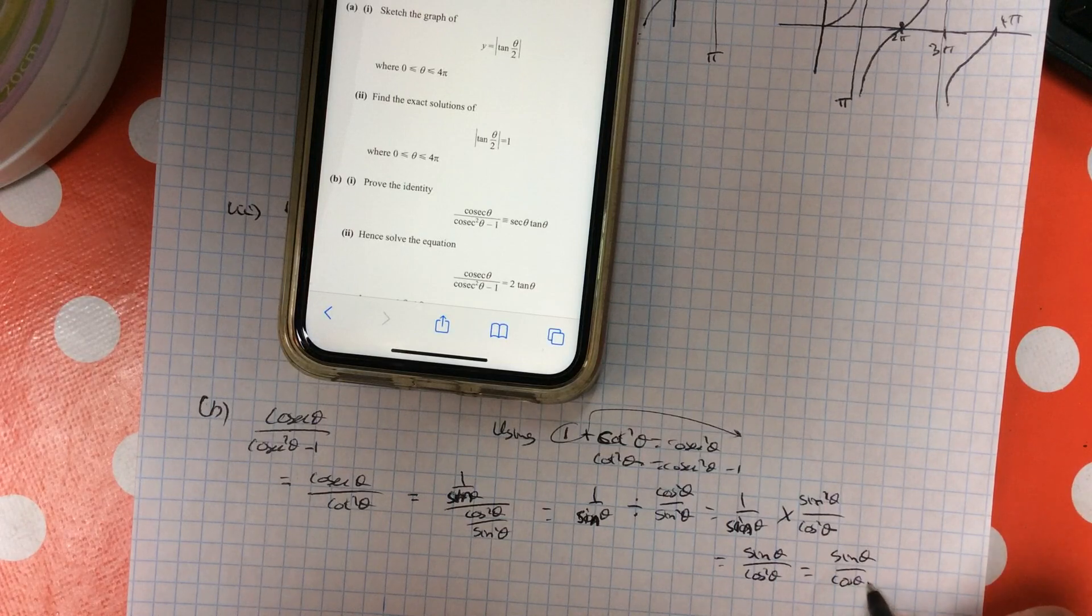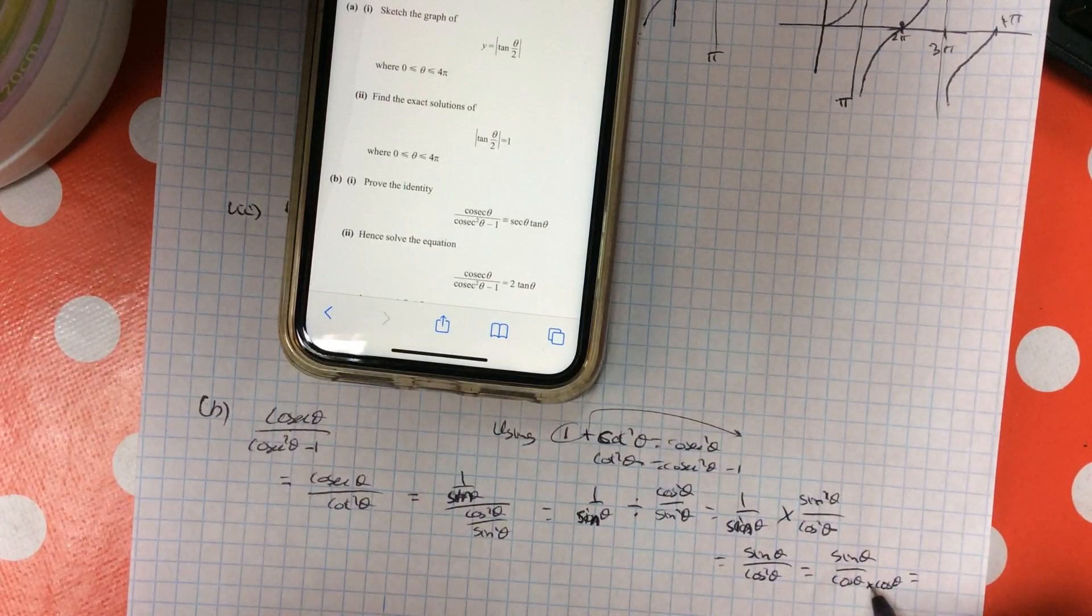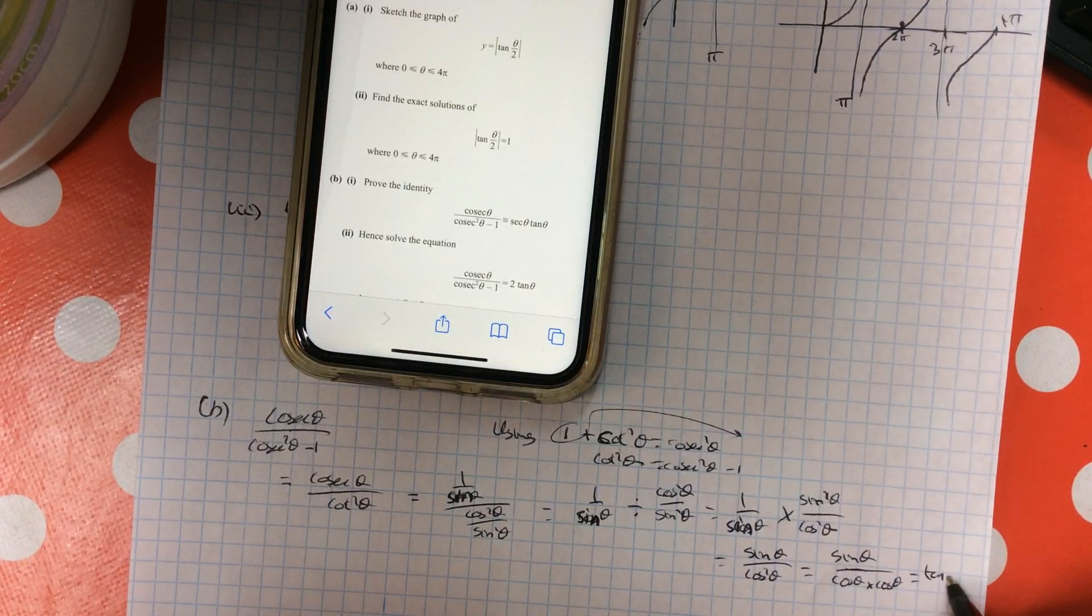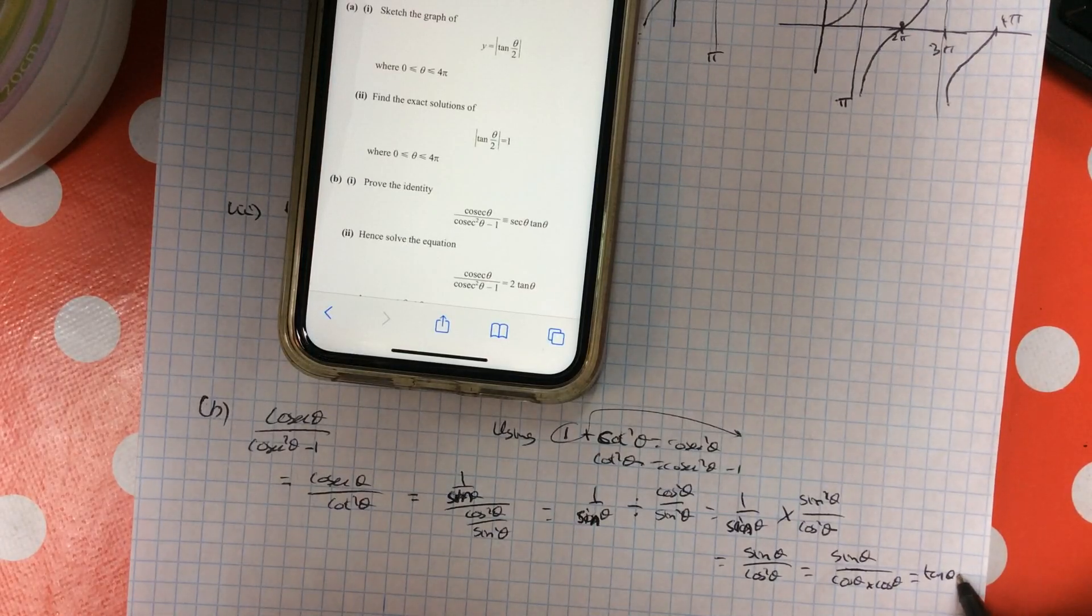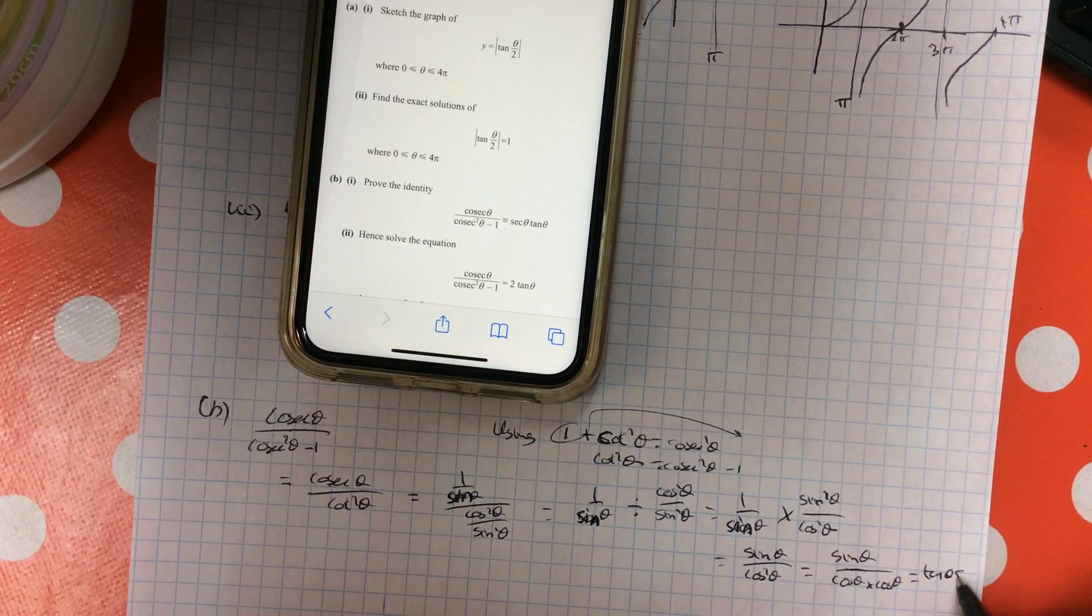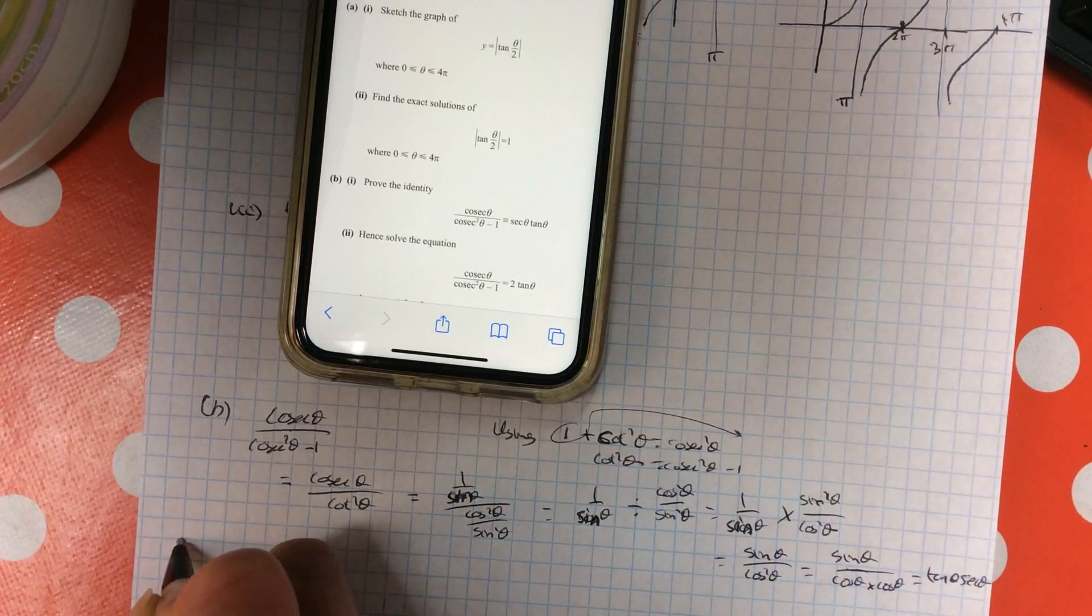So I have a sin over a cos times a cos on the bottom. Sin over cos is tan, and 1 over cos is your sec. Part 2.